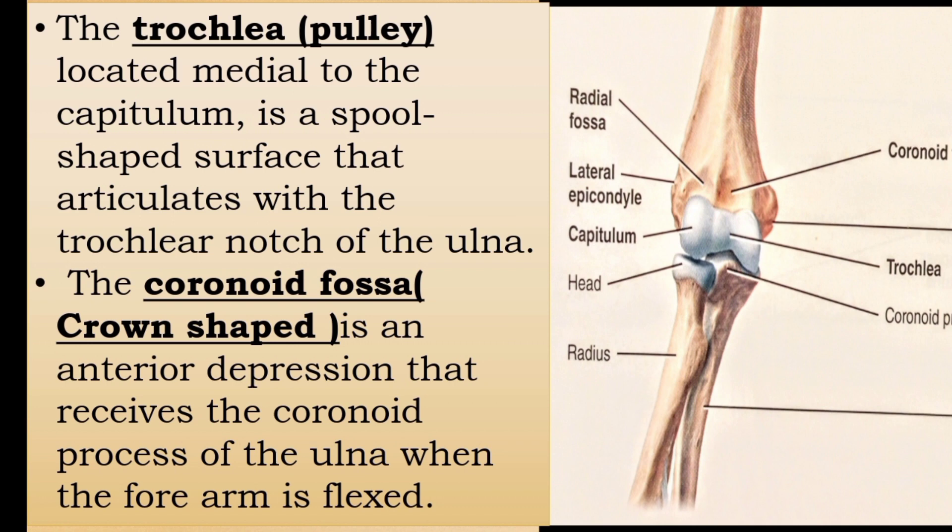The coronoid fossa is crown-shaped. It is an anterior depression that receives the coronoid process of the ulna when the forearm is flexed.